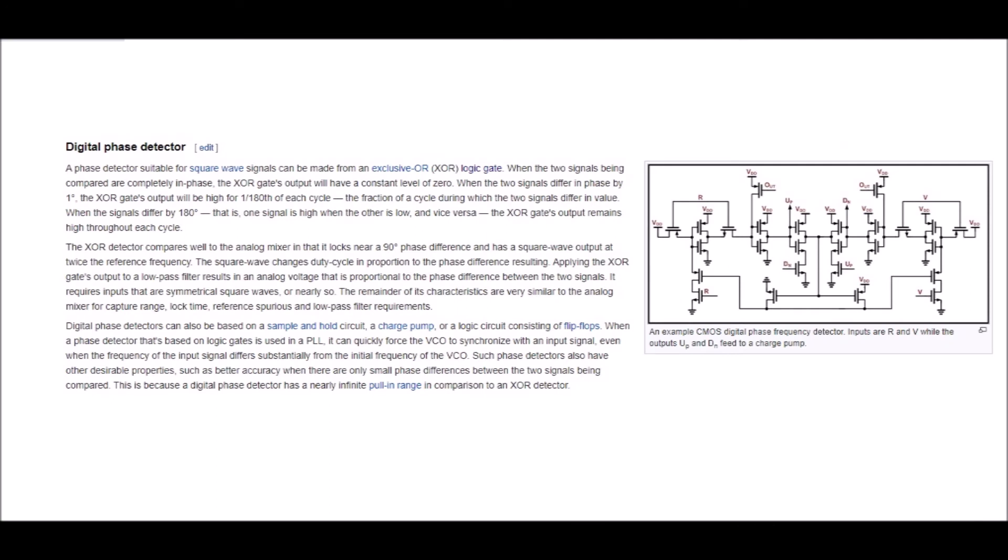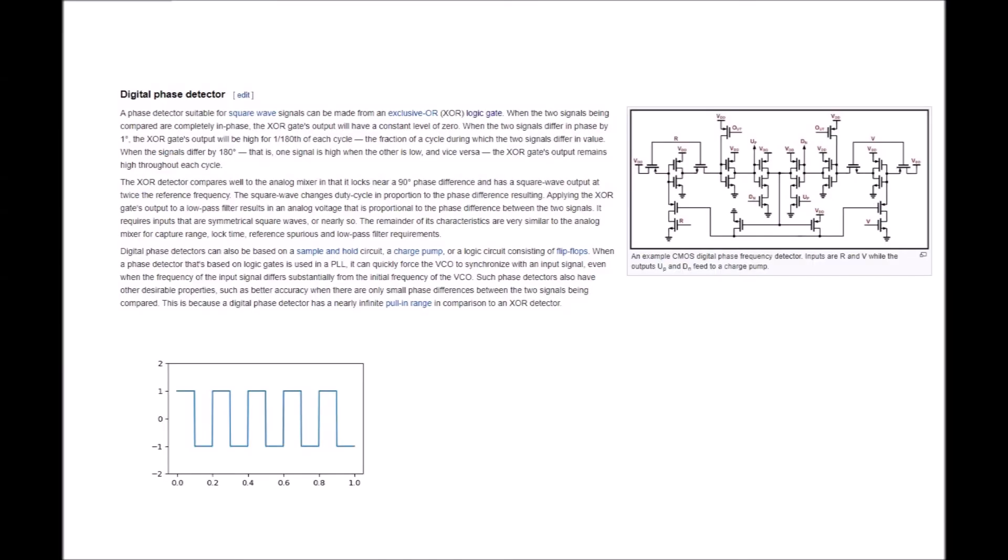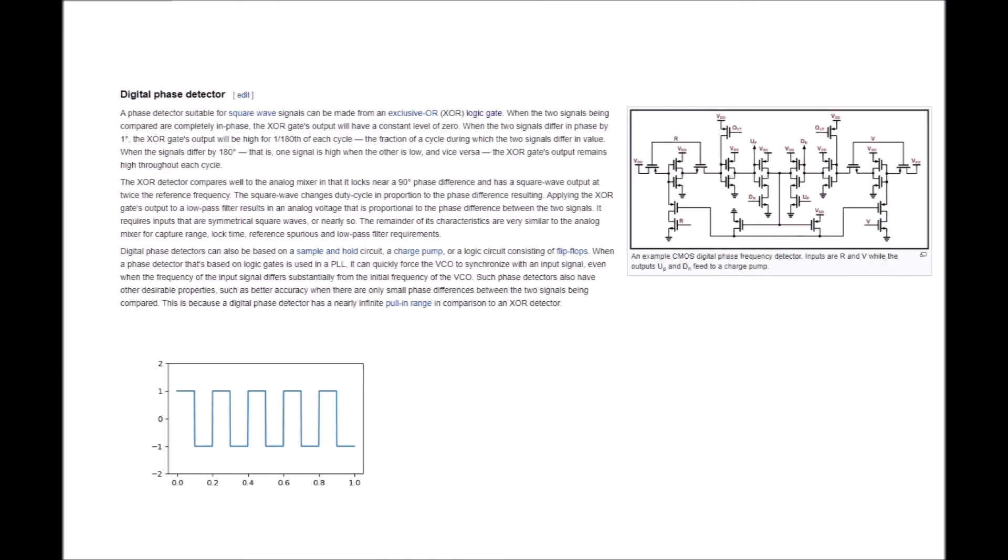Next heading is digital phase detector. A phase detector suitable for square wave signals can be made from an exclusive OR XOR logic gate. When the two signals being compared are completely in phase the XOR gate's output will have a constant level of zero. When the two signals differ in phase by one degree the XOR gate's output will be high.